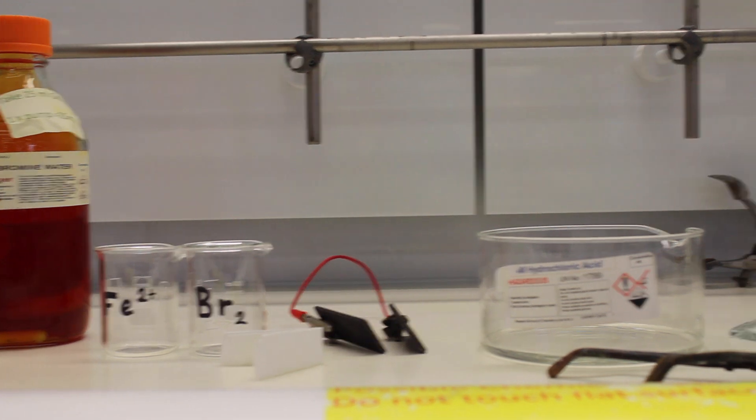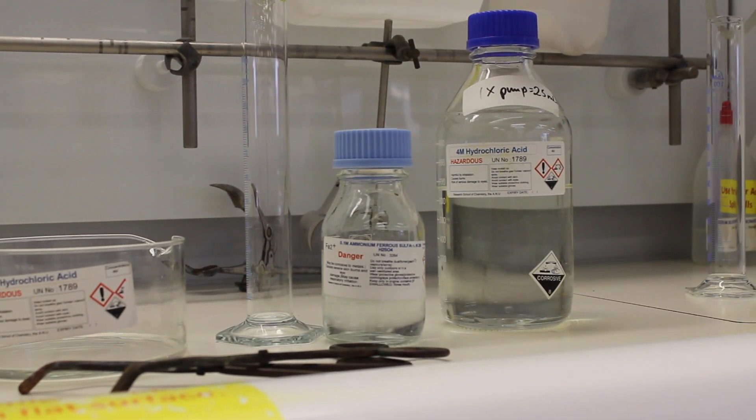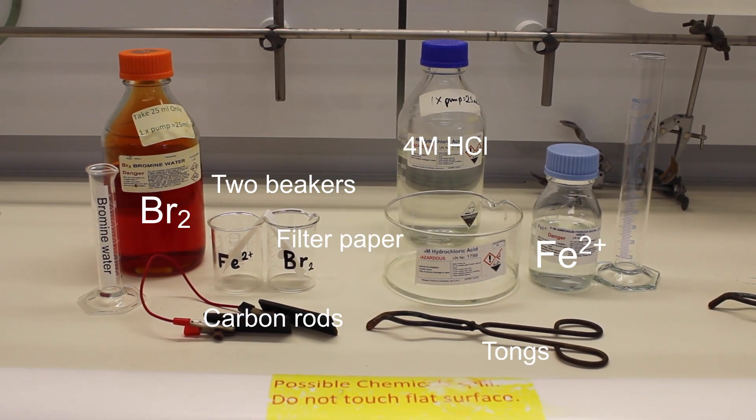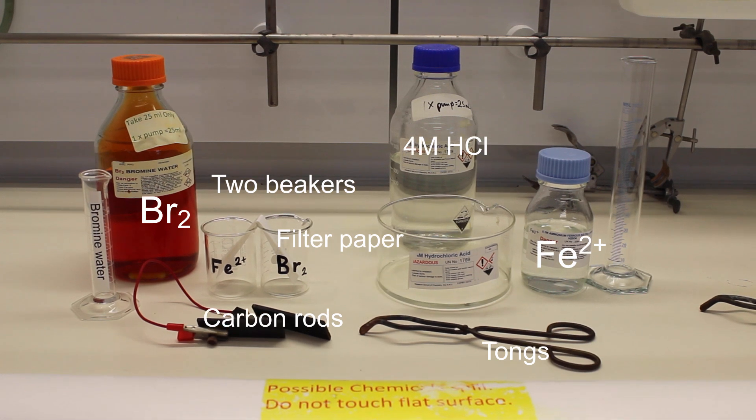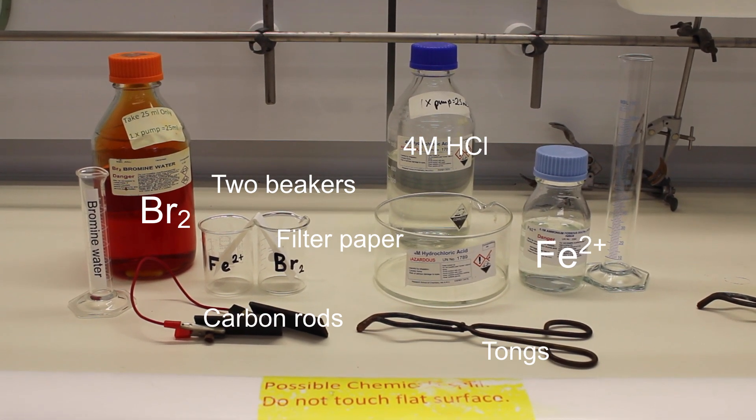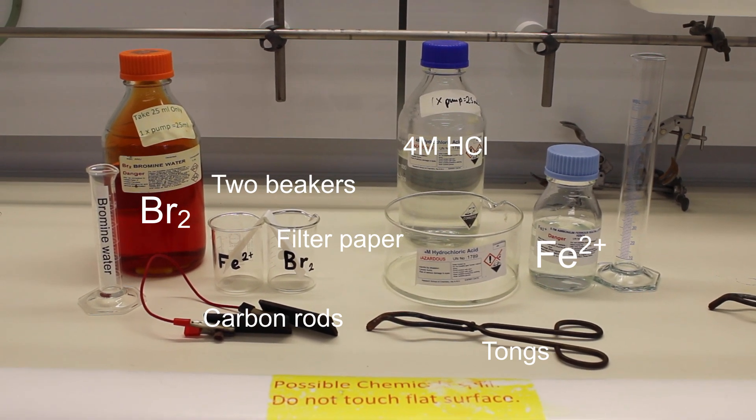Now we'll use our bromine and iron couples to set up an electrochemical cell in the fume hood. You will need bromine water, two 100 ml beakers, a solution of iron 2+, two carbon rods joined by a copper wire, four molar hydrochloric acid, a large piece of filter paper, tongs and gloves.